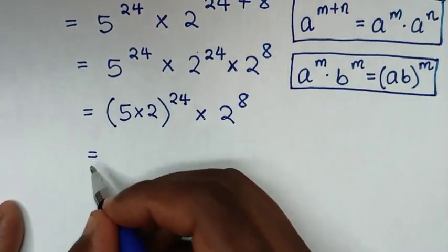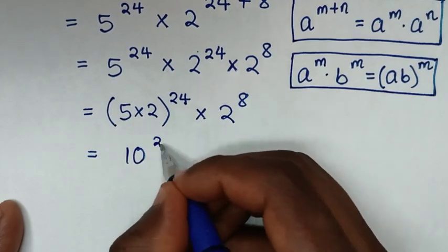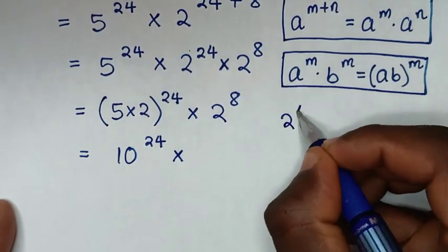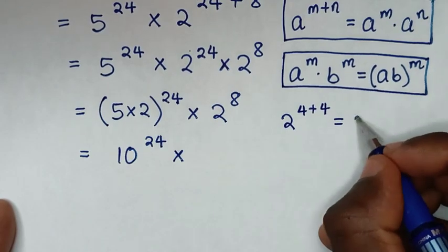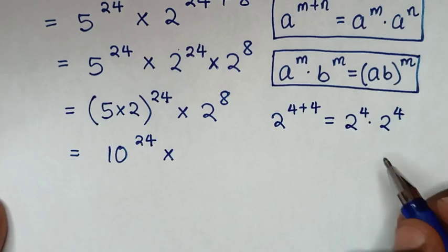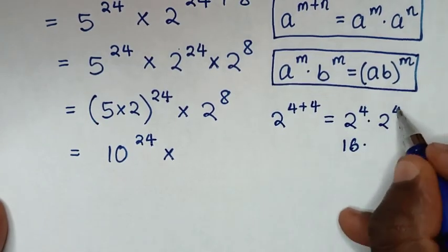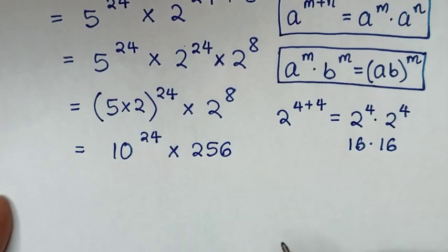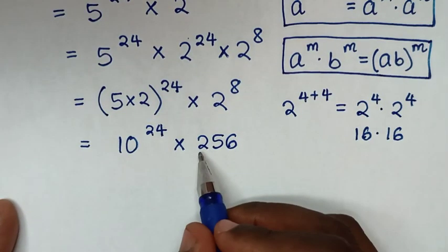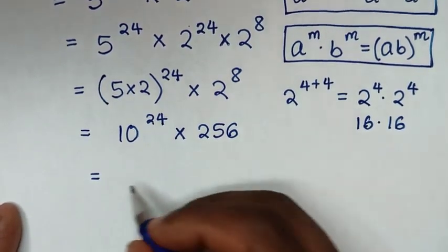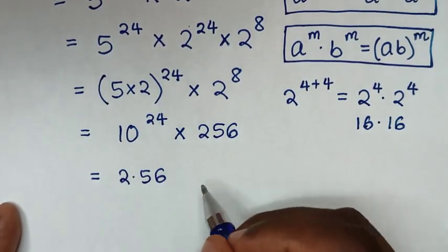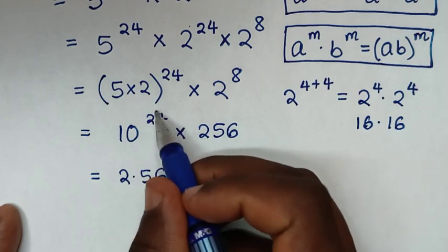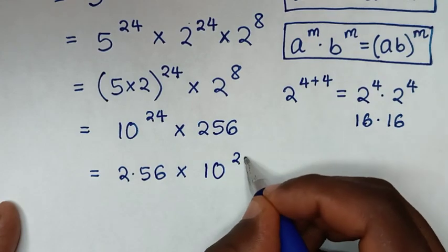It will be equal to 5 times 2, which is 10, power of 24. Then times 2 power of 8, which is the same as 2 power of 4 plus 4, equal to 2 power of 4 times 2 power of 4. Since 2 power of 4 is 16, we have 16 times 16, which is 256. Placing this into standard notation, it is 2.56 times 10 power of 2. Adding the power of 2 to the power of 24 gives power of 26. So the final result is 2.56 times 10 power of 26.